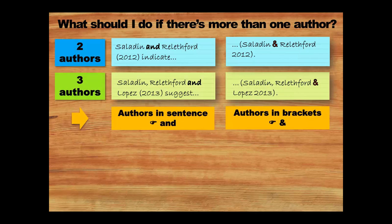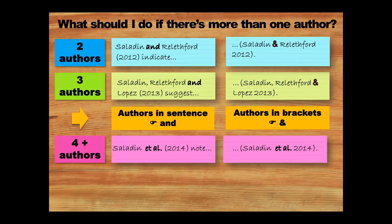A lot of the time when things are in brackets, we can use short forms or symbols where we'd normally use words. There's another short form that's useful: et al., which stands for the Latin et alia, meaning 'and others.' We use et al. when we have four authors or more, listing the first author and then writing et al. with a full stop. This reduces clutter in our sentences.